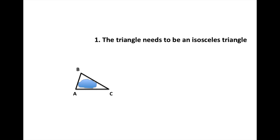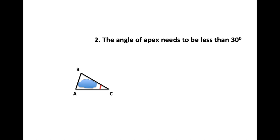For a lesion to be excised and resurfaced with a rotation flap, the defect should first be triangulated to make a triangle A, B, C. Two points are to be remembered when triangulating the defect: this triangle needs to be an isosceles triangle with the side AC equal to BC, and the apex of this isosceles triangle at point C should be less than 30 degrees.